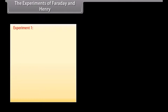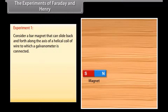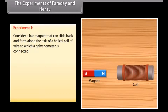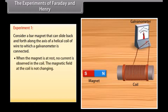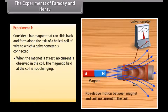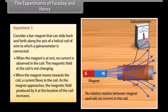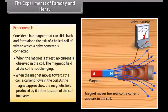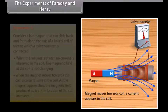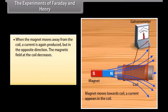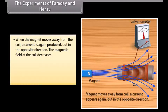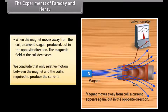Experiment 1: Consider a bar magnet that can slide back and forth along the axis of a helical coil of wire to which a galvanometer is connected. When the magnet is at rest, no current is observed in the coil — the magnetic field at the coil is not changing. When the magnet moves towards the coil, a current flows in the coil; as the magnet approaches, the magnetic field at the location of the coil increases. When the magnet moves away from the coil, a current is again produced but in the opposite direction. We conclude that only relative motion between the magnet and the coil is required to produce the current.